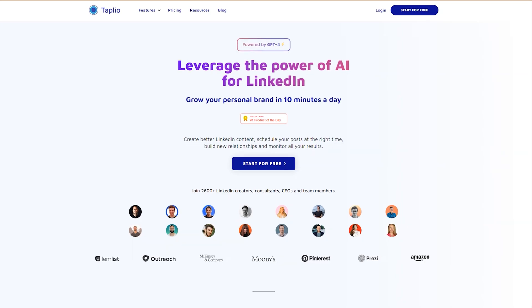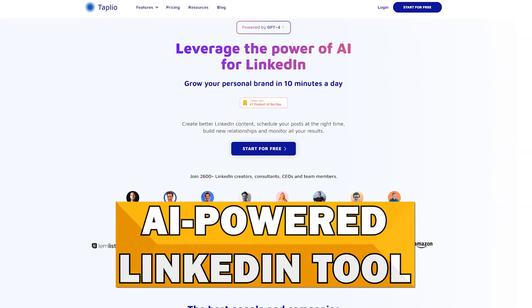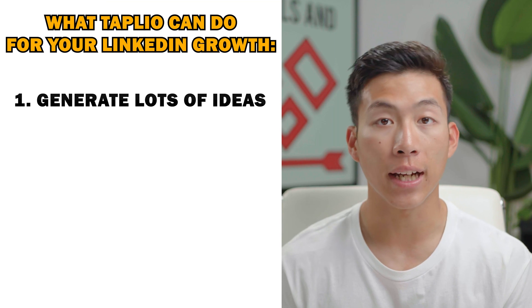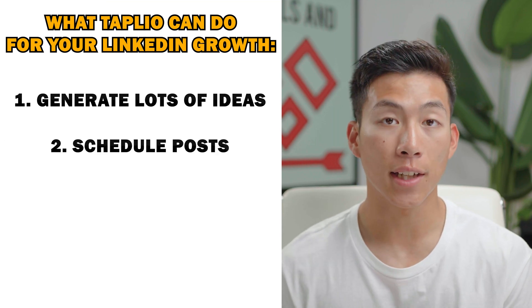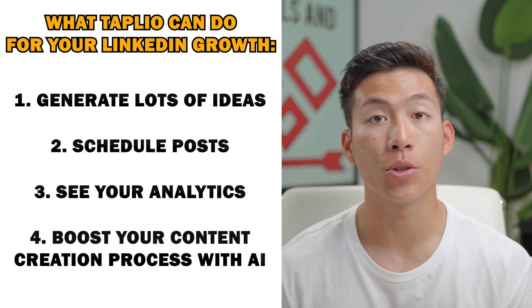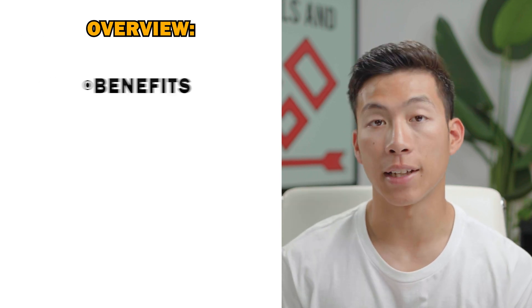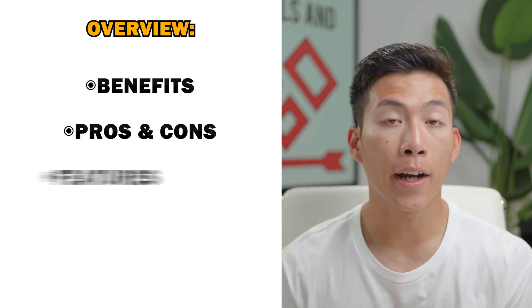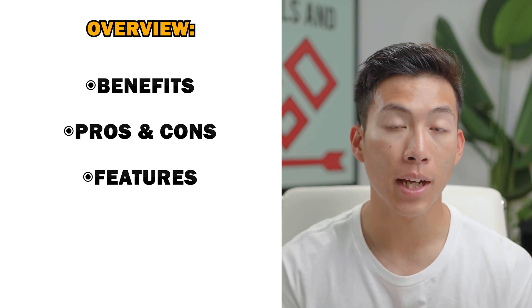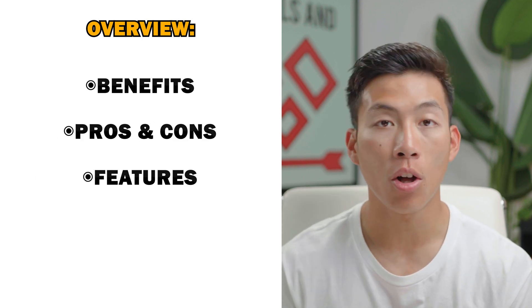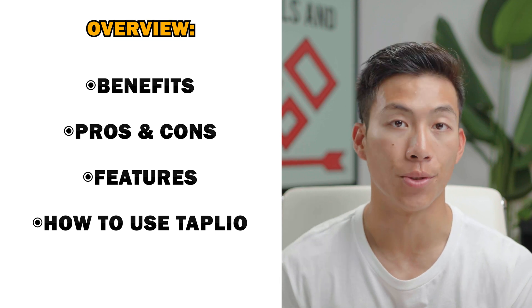In today's video, I want to go over a complete review of the LinkedIn platform Tapio. Tapio is an AI-powered LinkedIn tool that can help you do a bunch of stuff such as generating ideas for your posts, automatically scheduling them, seeing what types of posts are doing well on the platform, and much more. Be sure to watch the entire video because we'll be covering the main benefits, pros and cons, and I'll also be taking you through the Tapio website to show you all the features and how easy it is to use.